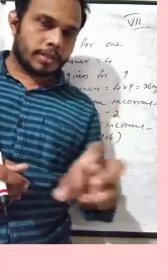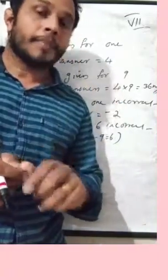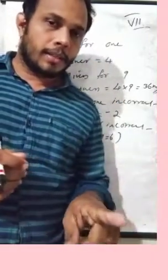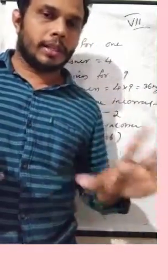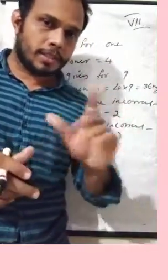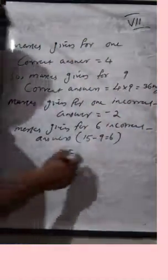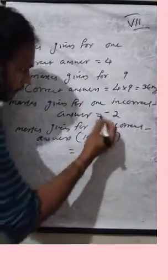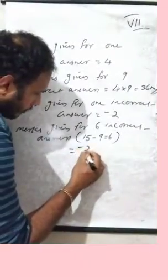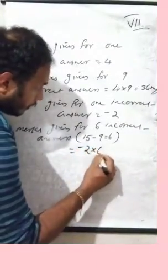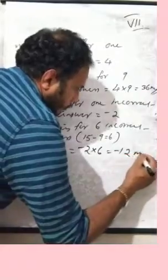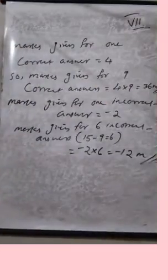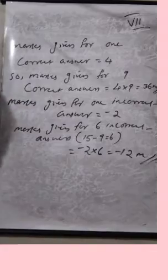6 questions are incorrect. So one incorrect answer is minus 2. That is a diminishing minus number. So 4 into 9 for correct answers, and minus 2 into 6 for incorrect answers. That gives minus 12 marks from incorrect answers.